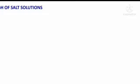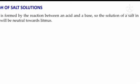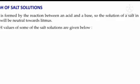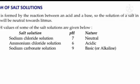The pH of salt solutions: pH means hydrogen ion concentration. The letter P stands for 'potenge,' a German word meaning power. Here is a table of pH values of some salt solutions. Sodium chloride solution has a pH of 7 — neutral. Ammonium chloride NH4Cl has a pH of 6 — acidic in nature.